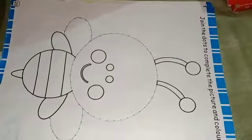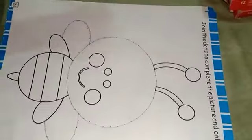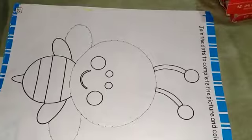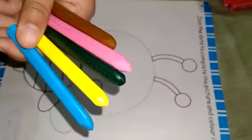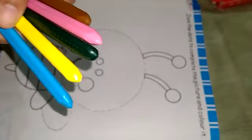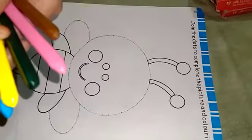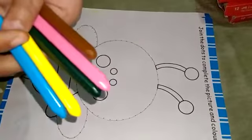So children, these dots are joined. Now we can fill in the color. I have seen which colors you have. Sky blue, yellow, dark green, pink, and brown.